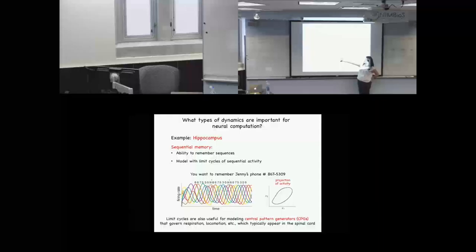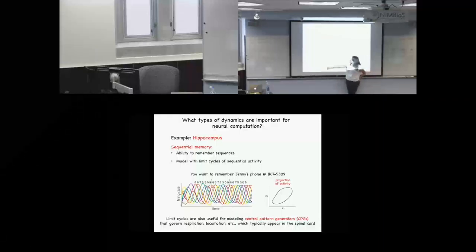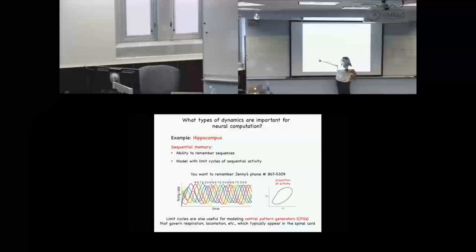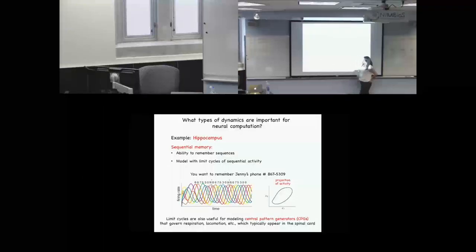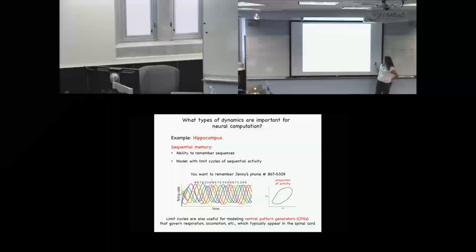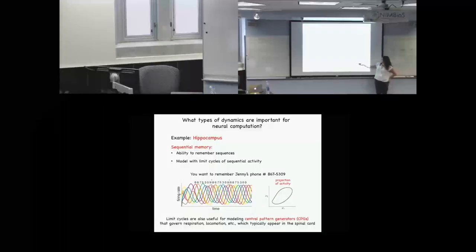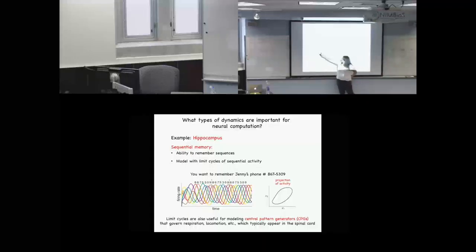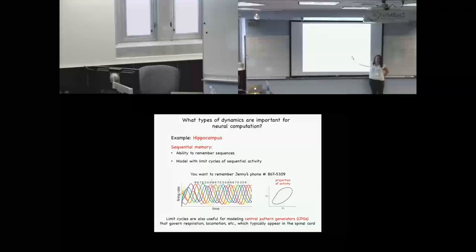Let me talk you through these types of pictures. There's a different color for the firing rate of each neuron, and we're typically thinking of the neuron carrying the most information or being active at its peak. We're tracking the peaks of these firing rate curves over time. We can also project this high-dimensional situation down — projecting onto the first two neurons in the sequence, we'd get a nice cycle of activity, and you'd stay within this cycle over time.